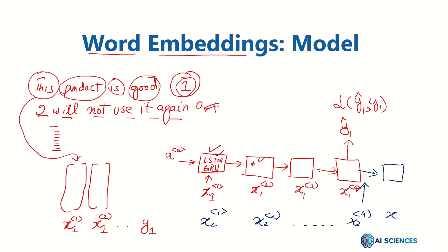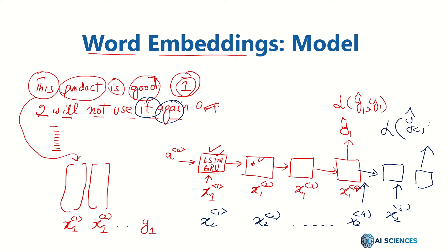The block is repeated for the fifth word — x25 — and then we compute y2-hat, compute the loss for y2, and backpropagation is applied.